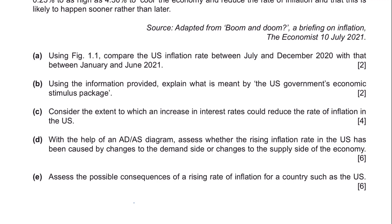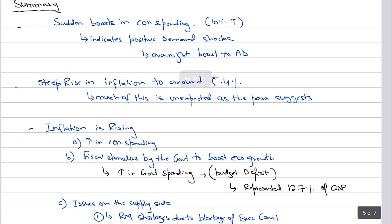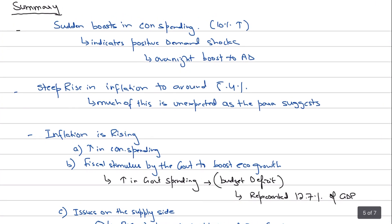Part B says: using the information provided, explain what is meant by the US government's economic stimulus package. Before I move on to part B, I just want to summarize the case study. The case study says there's a sudden boost in consumer spending — positive demand shocks — where consumer spending is going up by 10% annually. That would definitely result in inflation.